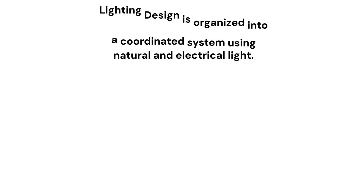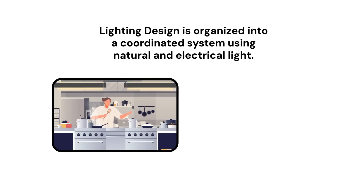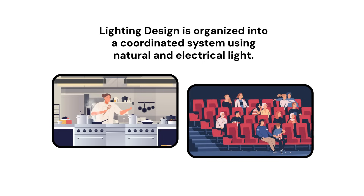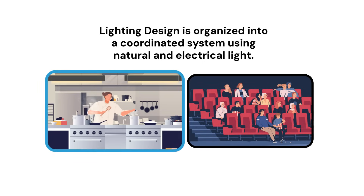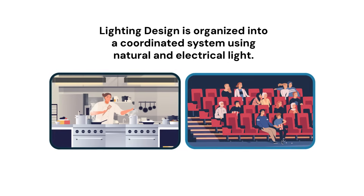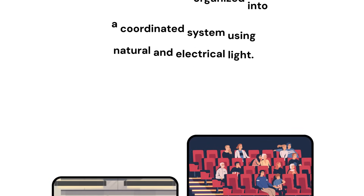Lighting design is organized into a coordinated system, using natural and electrical light to meet the requirements of any space. For example, kitchen lighting is set to light the counter for cooking. Theater lighting aids occupants in darkness and supports seating arrangement.